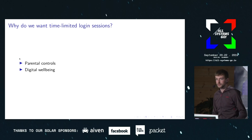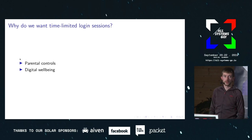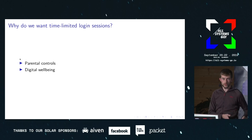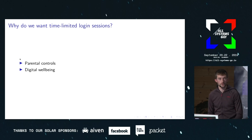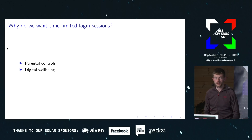We want to be able to limit the amount of time that your child — or whoever, generally we use child as an example — can use the computer, or use a particular app, or which times of day they are allowed to use it. And you can translate that from enforcing it on a child to advising it on yourself — for example, I shouldn't be allowed to use the computer after 1am because it is always a bad idea and I want my computer to tell me that because I never look at the clock.